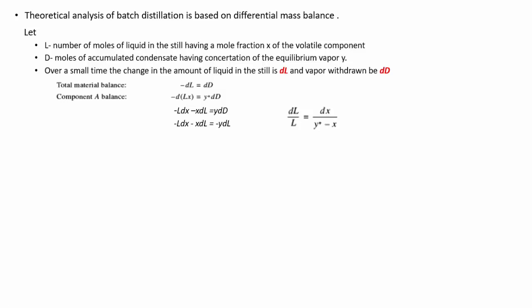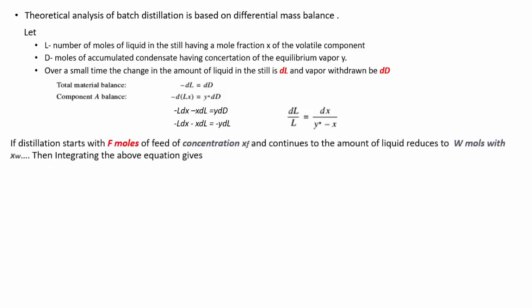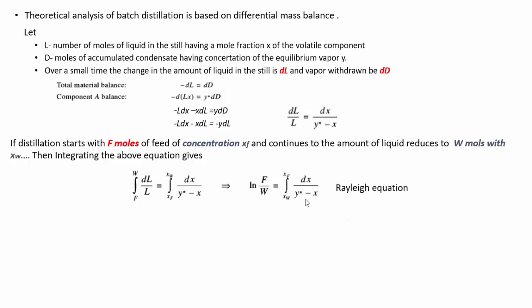For a batch distillation with F moles of feed at mole fraction xF, if the liquid is reduced to W moles with mole fraction xW of the more volatile component, integrating the equation gives the Rayleigh equation: ln(F/W) equals the integral from xW to xF of dx/(y* - x). Using equilibrium xy data, you can plot x versus 1/(y* - x) and determine the required amounts.